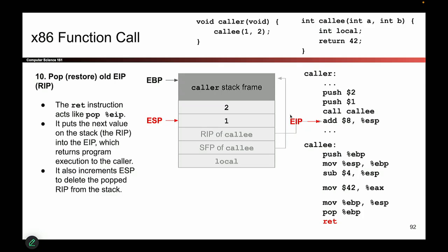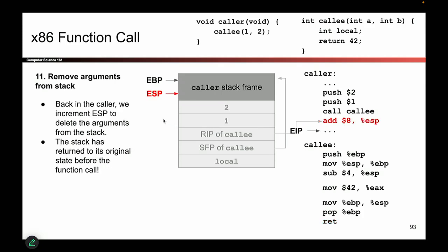Now the caller can continue executing whatever it wants to do. One tiny last thing: we pushed those arguments at the very start — caller's done with them, callee's done with them. So we move ESP up to delete those arguments off the stack, and we're done. If you stare at this and go all the way back to step one, these diagrams are exactly the same: EBP is back at the top, ESP is back at the bottom of the caller stack frame, and EIP is back in the caller where it belongs. Everything is back where it used to be.